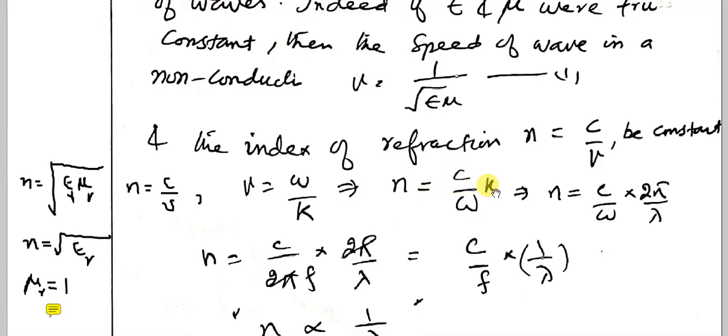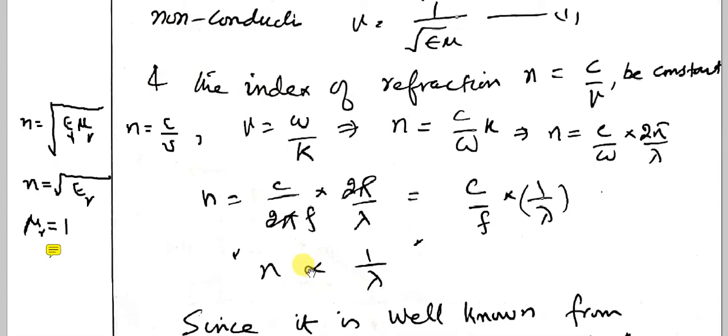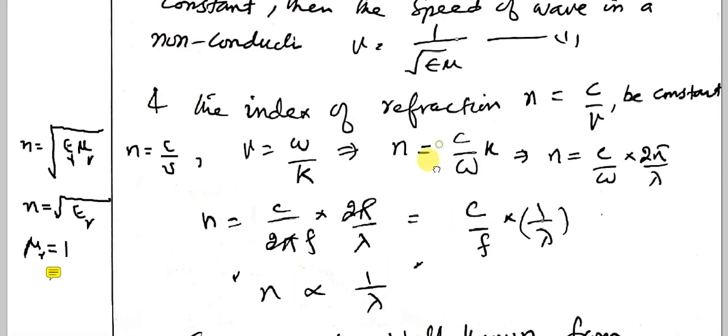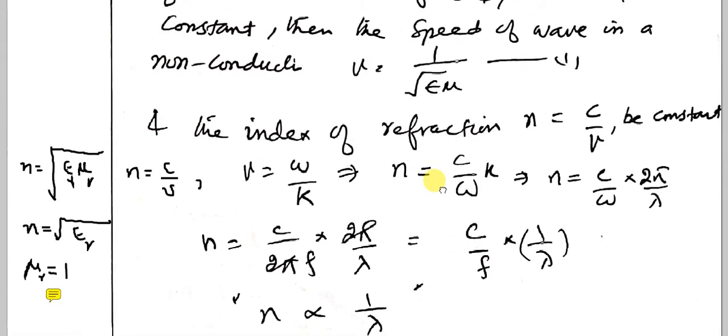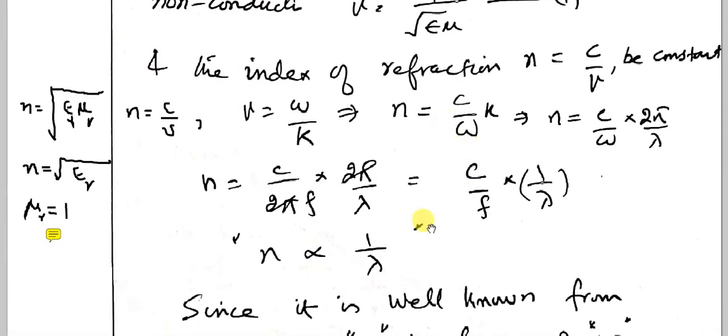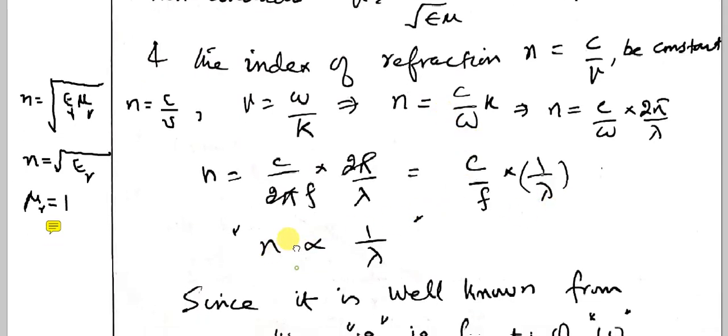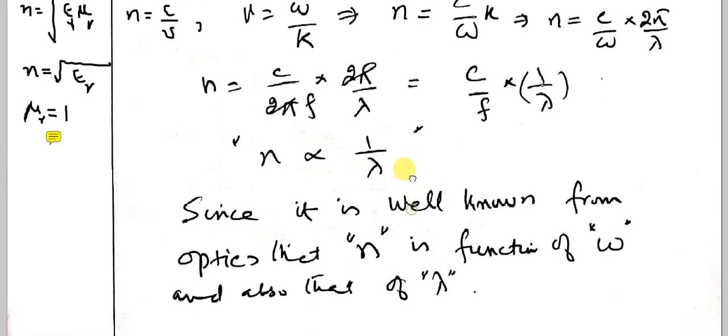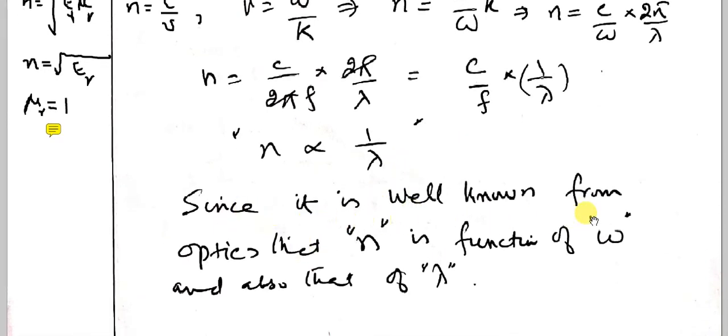Further, we put omega as 2 pi f. We find that frequency times wavelength, and we find n is in inverse proportion to lambda. It is well known from optics that n is a function of omega and also of lambda.